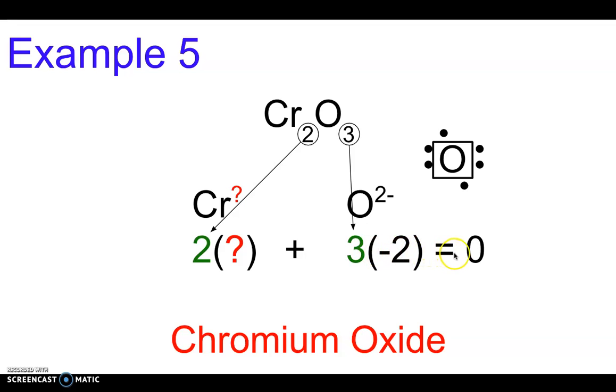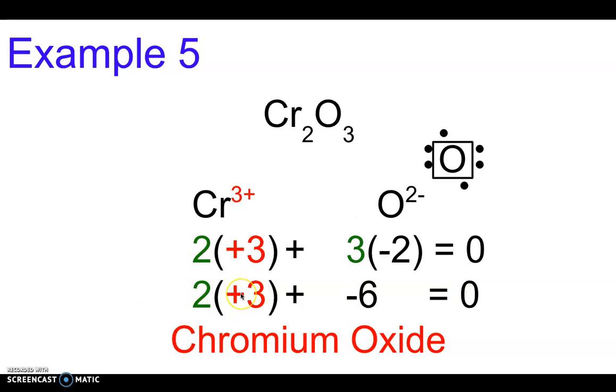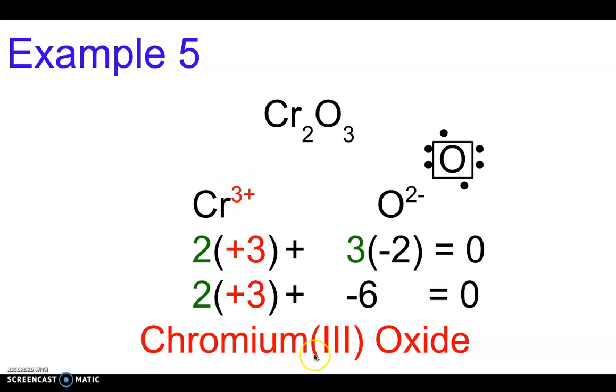Or in other words, I've got two times some number plus -6 equals zero. Well, again, this is going to be an algebra problem. So we'll add six over and then we'll divide by two. I'll show this in class, I just don't have room to show it on the slide here. But add six over, divide by two, six divided by two is three. Our unknown number must be +3, because two times +3 is +6, and +6 plus -6 equals zero. So then it must be a chromium(III) ion, so we'll write this as chromium(III) oxide.